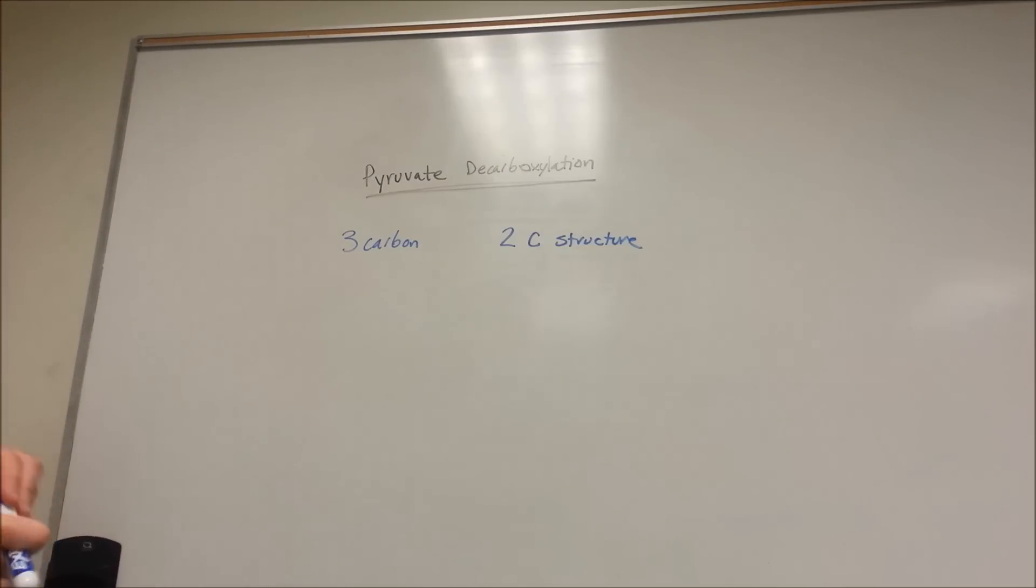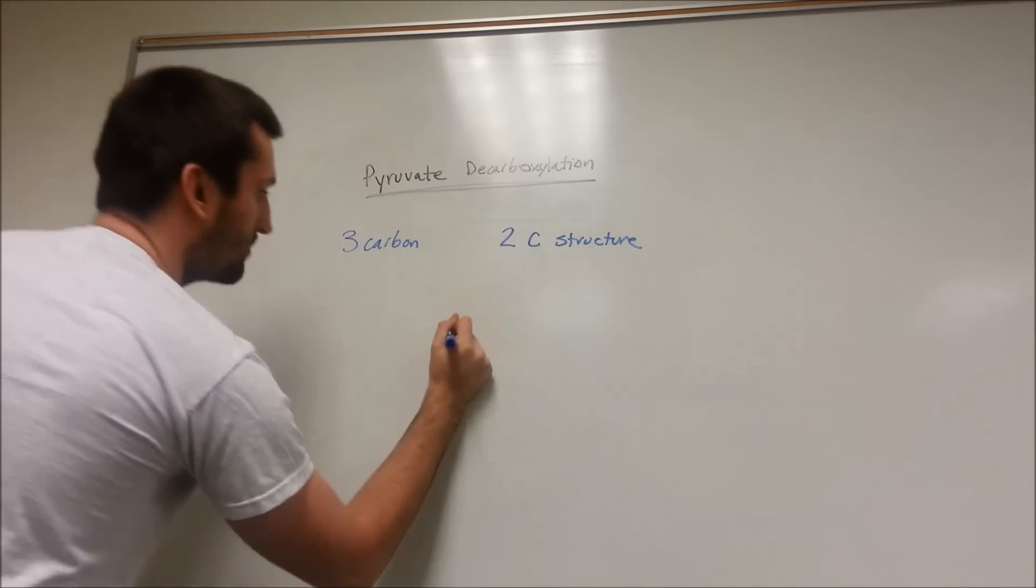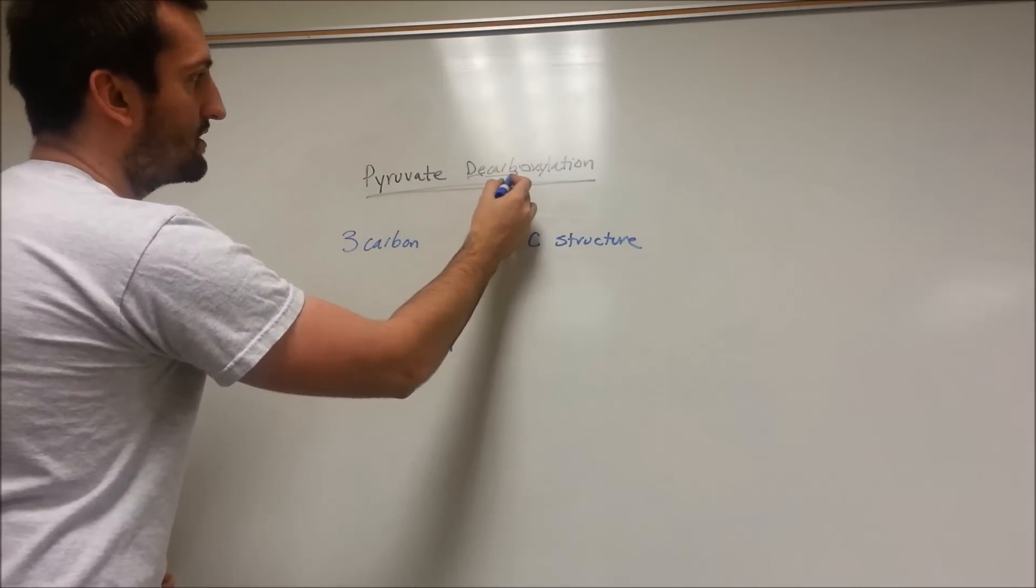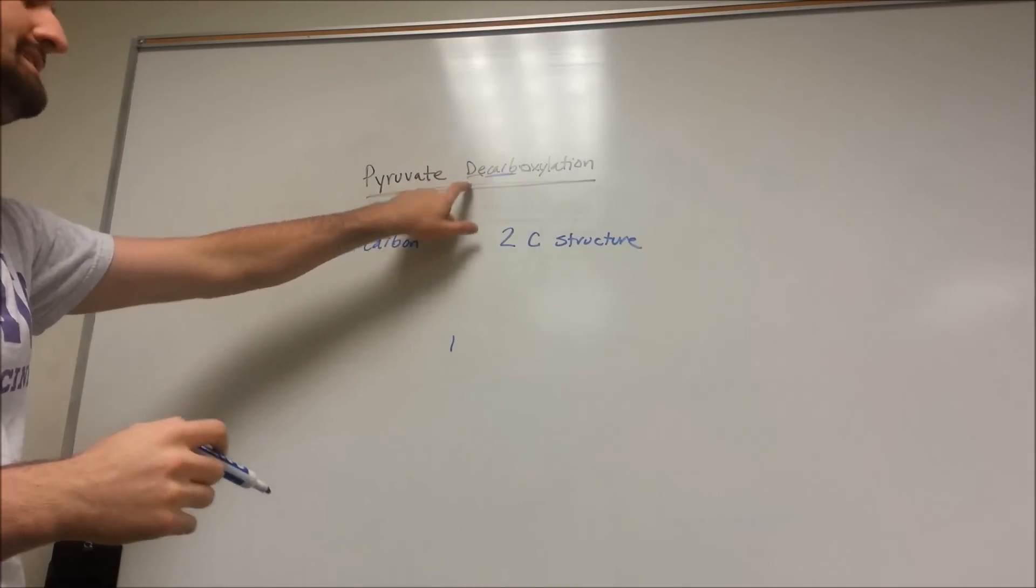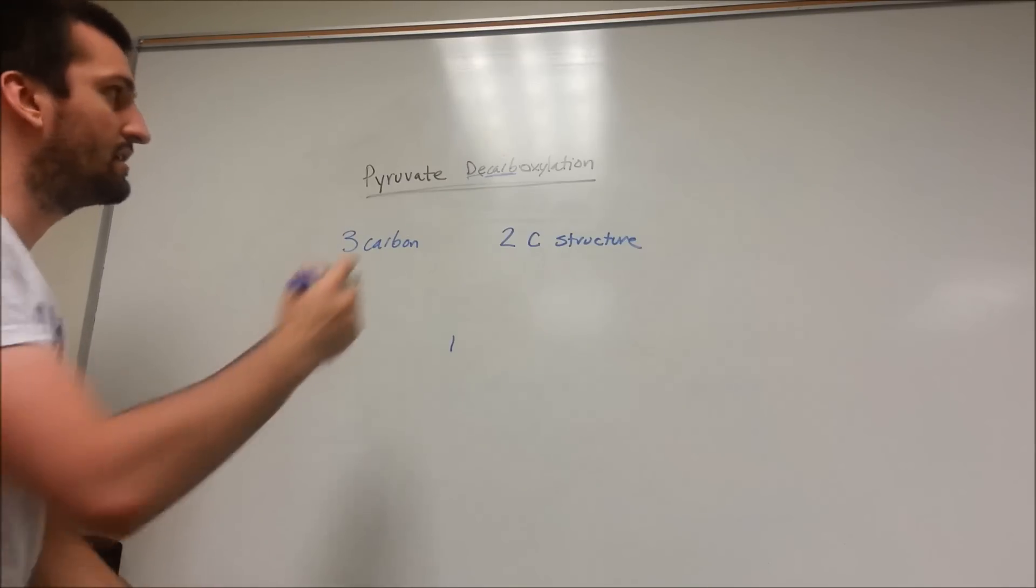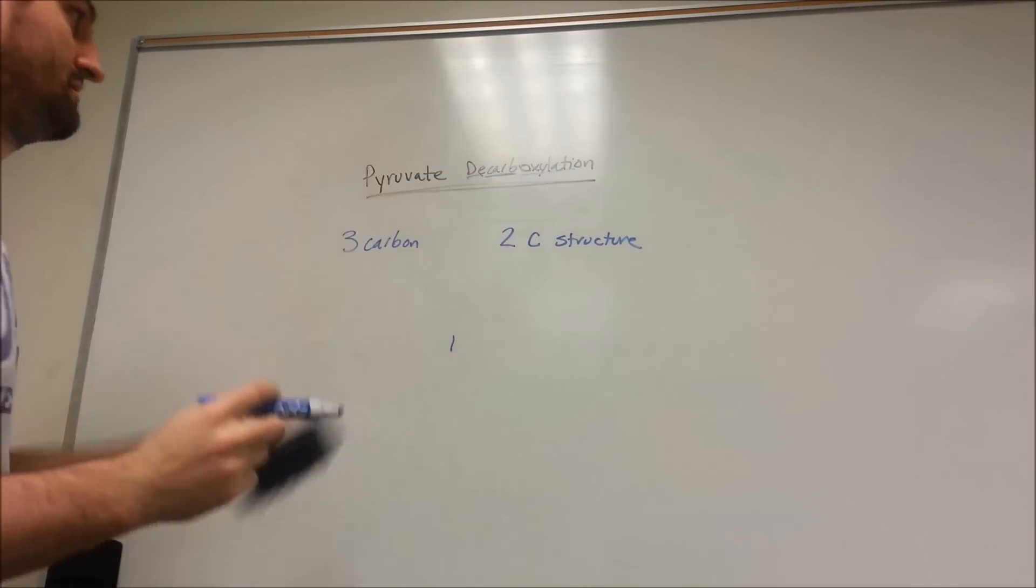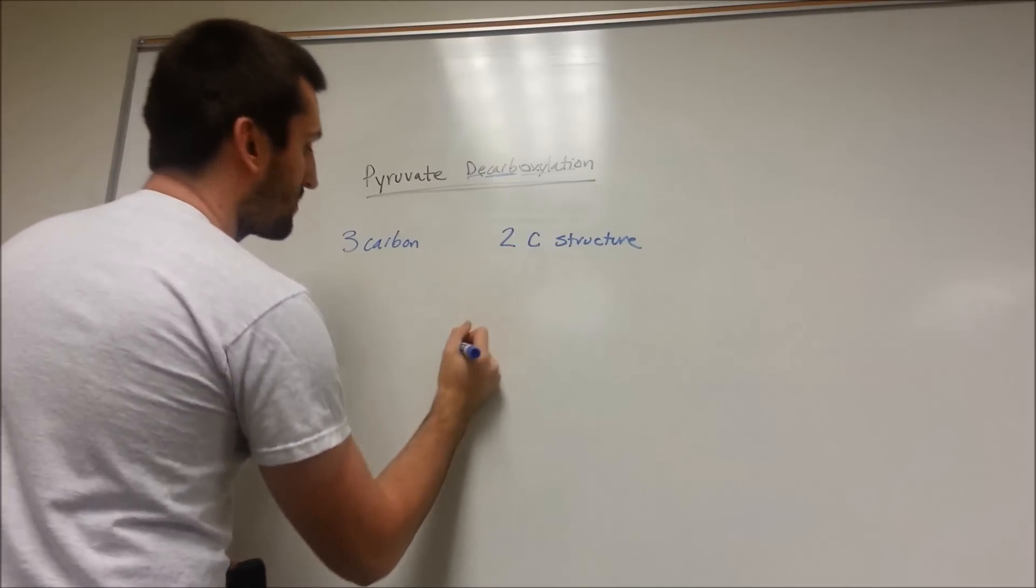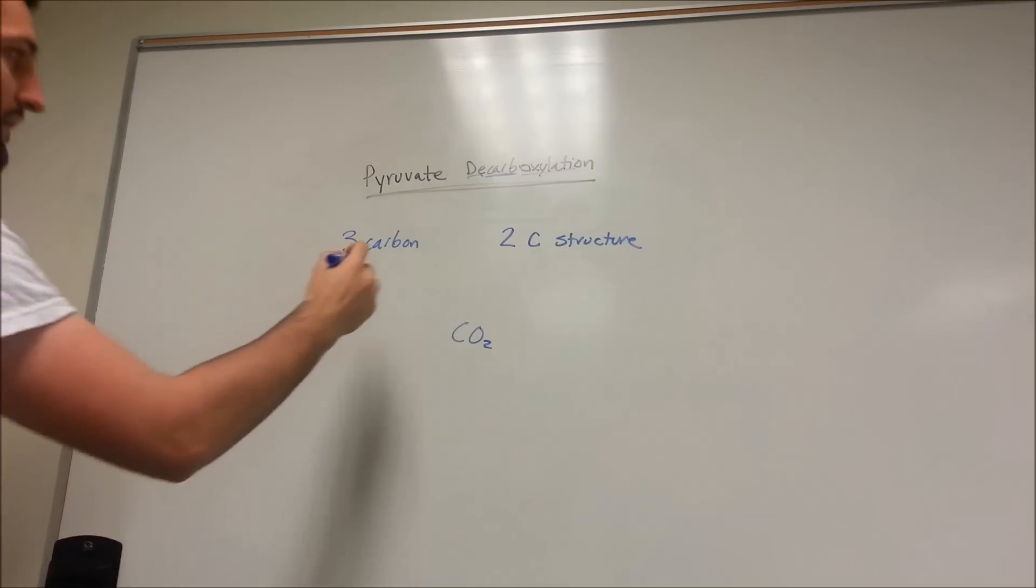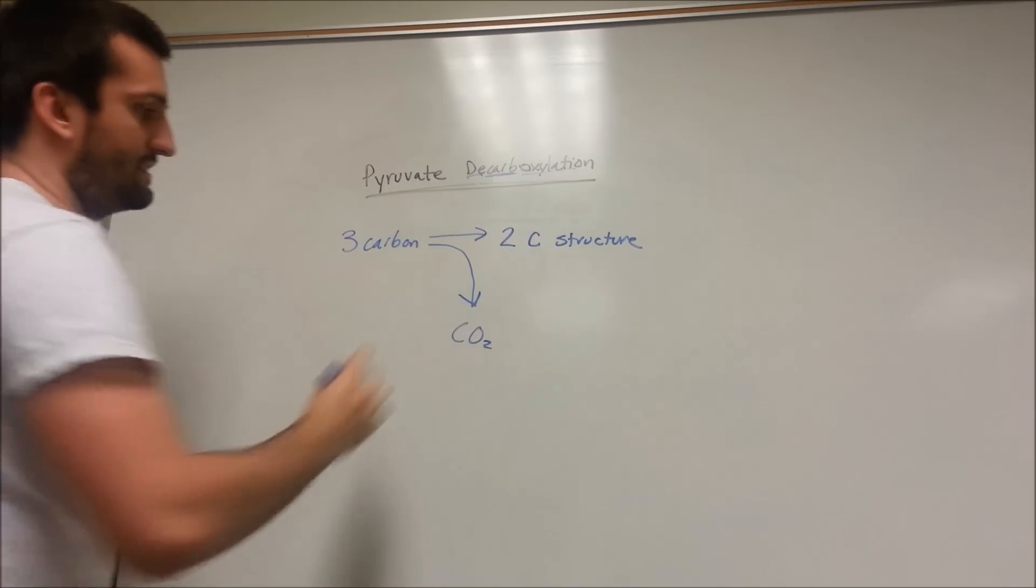Well, why is this important? Well, it means that somewhere in this reaction, we're going to lose a carbon. So we're going to lose 1 carbon. D-carbo. So we took off, we decarbed pyruvate. Well, decarboxylation. So we take off both a carbon and some oxygens. So ultimately, we're going to lose a CO2 molecule. So somewhere in this reaction, we're going to spit off a CO2 molecule.